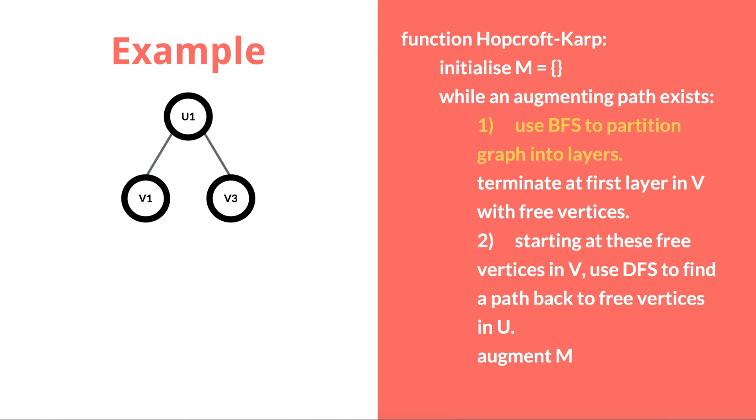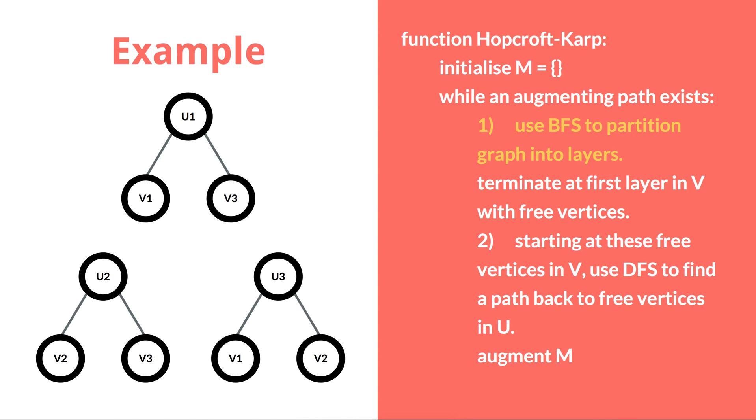For U1, this tree is produced. For U2, the tree connects to V2 and V3, and the final tree produced starts at U3, connecting to V1 and V2. A layer with three vertices in V has been found, and so the first part of the iteration terminates.